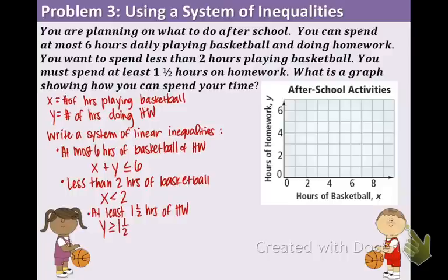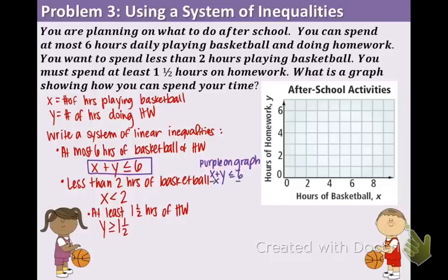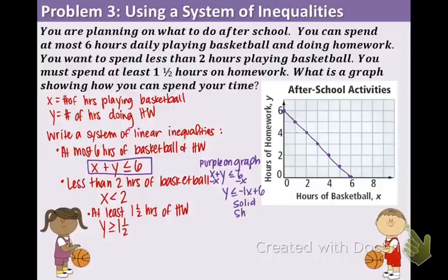Now we want to graph this system. Because time cannot be negative, the graph makes sense only in the first quadrant. First, graph x plus y less than or equal to 6 by rearranging to y is less than or equal to negative x plus 6. Plot 6 on the y-axis, go down 1 over 1. This is a solid boundary line, and we shade below because of the less than or equal to symbol.